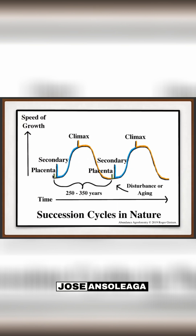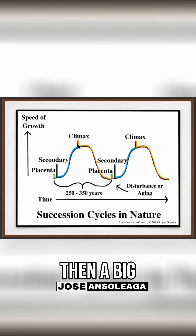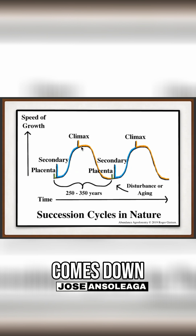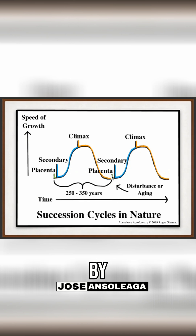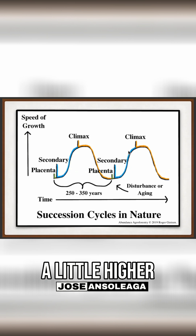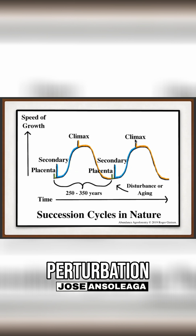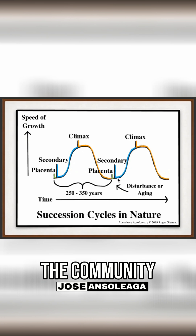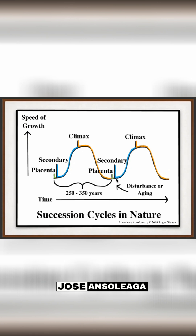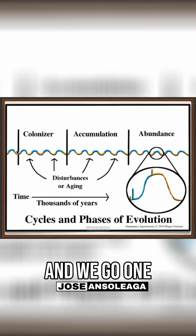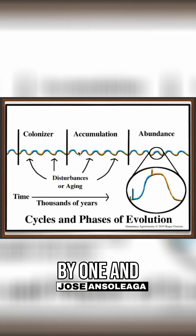Imagine there is a climatic forest — a homework forest — and then a big avalanche comes down and destroys the forest completely, but the soil is still there. A new process begins; regrowth happens little by little, but it will be a different climatic forest because after every perturbation, you are different, and the community — the forest — is also different.